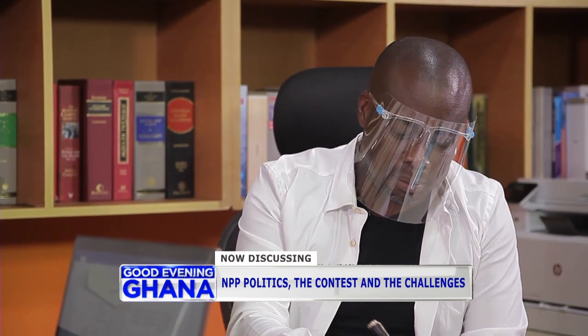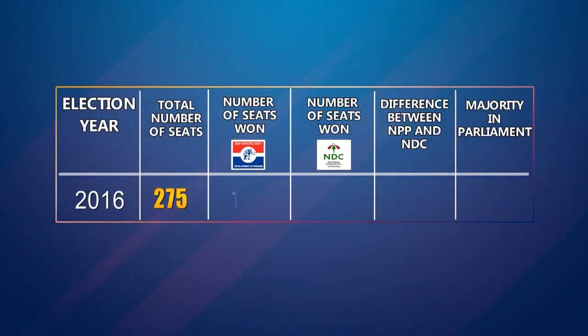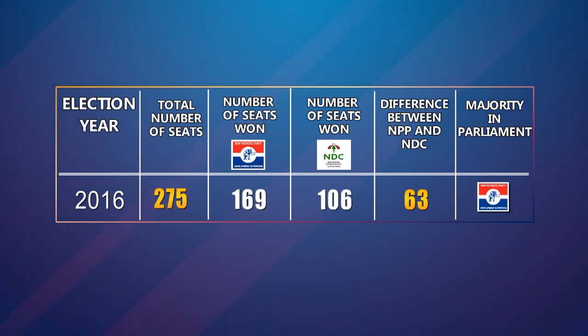In 2016, the NPP won by a wide margin of 63, winning 169 constituencies with a lead of 63. Going into election 2020, for the NDC to have a chance of winning the presidential election, they will have to overcome that 63-seat parliamentary majority that NPP holds. That majority of 63 must be broken and defeated by NDC. If they are not able to do that, they will not be able to make any sustainable challenge that they have won the presidential election — that's the tyranny of the parliamentary results outcome in Ghana.